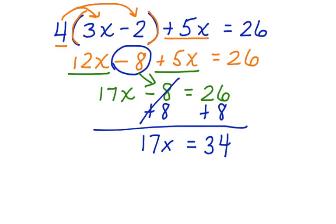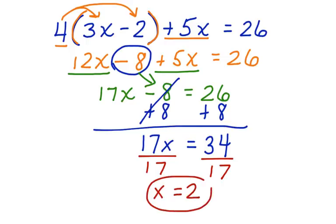Now, we have a one-step equation. We divide both sides by 17, and our answer is x is equal to 2.